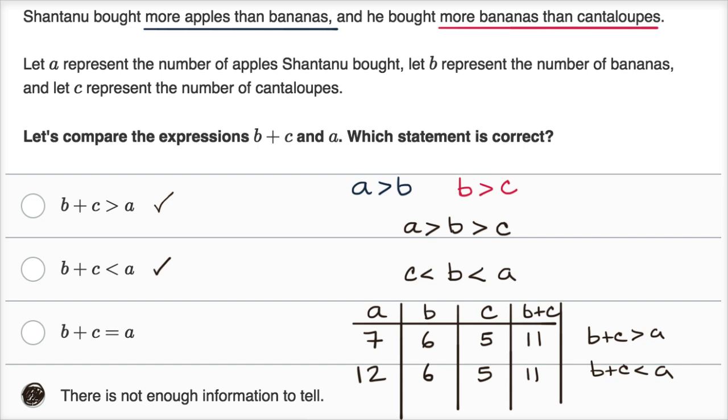I can even come up with a scenario where B plus C is equal to A. If it's six, five, and eleven, then B plus C is equal to A. So based on the information they gave us, any of these are actually possible. So there's not enough information to tell.